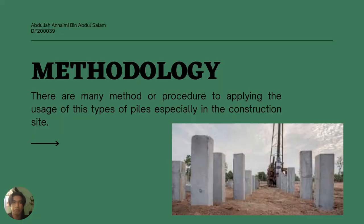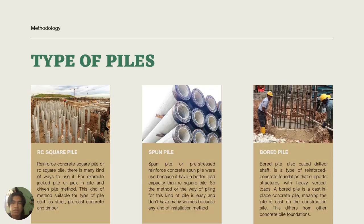Hello and good morning. My name is Abul Hanimi bin Abdul Salam, metric number DF20039. I'm going to talk about the methodology part of our project. There are many methods or procedures to apply the usage of the types of piles, especially in construction sites. We have three types of piles to discuss. The first is RC square pile — there are many ways to use it, for example the jack pile, jack-in pile, or ribbon pile method. This method is suitable for pile types such as steel, precast concrete, and timber pile.